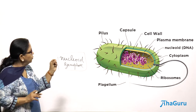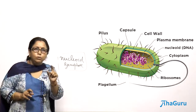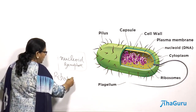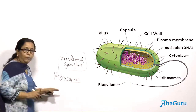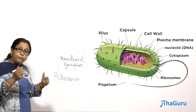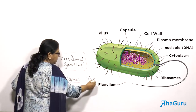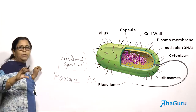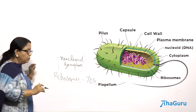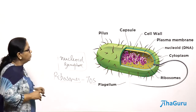Apart from DNA, inside the cytoplasm the only organelle you find is the ribosome. Ribosomes are mainly used for protein synthesis. The ribosomes of prokaryotes are different from eukaryotes — prokaryotic ribosomes are called 70S, meaning they are smaller than eukaryotic ribosomes. Eukaryotic ribosomes are 80S, but prokaryotic ribosomes are 70S.